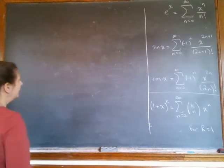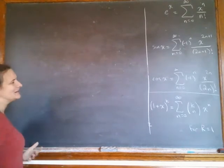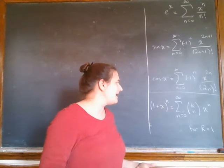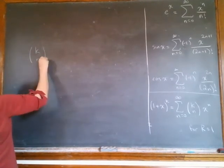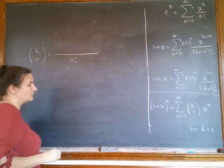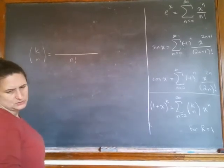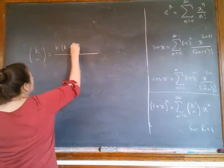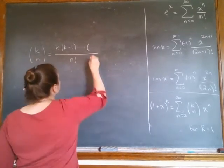What is this k by n? So for our binomial series here, it's the same, k choose n. Let's see, I should call it k choose n. So for k choose n, even when k is not an integer, n is still an integer. n is going from 0 to infinity.